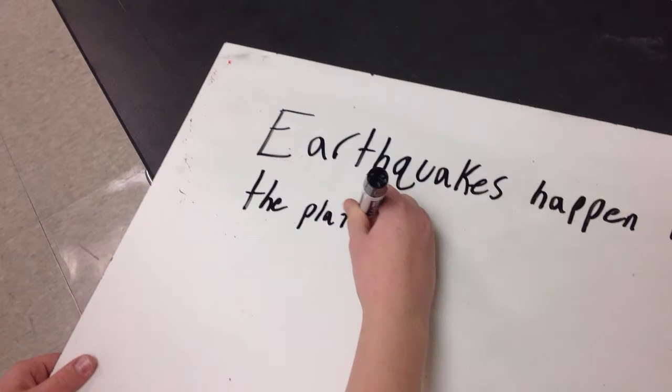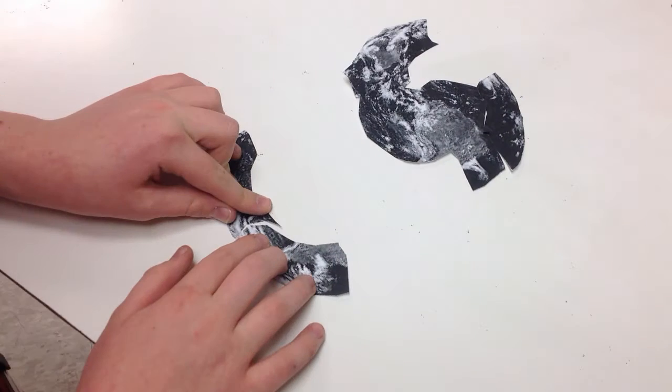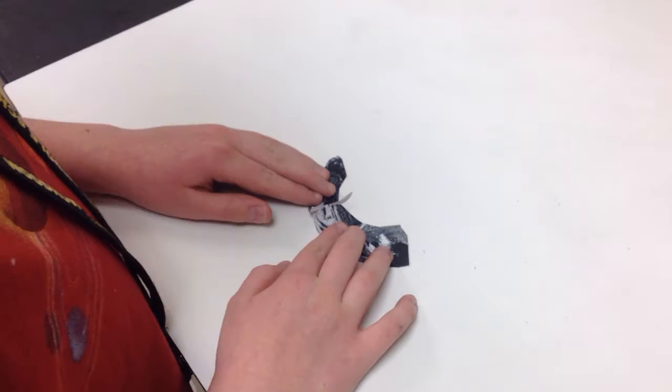Earthquakes happen when the plates rub against each other, like so. This is called a transform, this is a divergent, and this is a convergent.